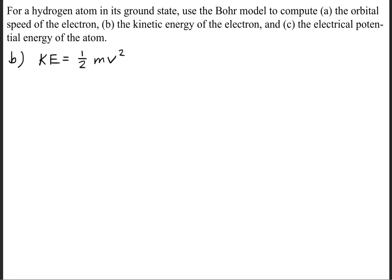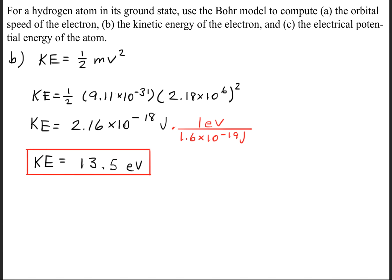In order to solve part B, we need the kinetic energy formula, or the classical kinetic energy formula. We now know what the velocity was, because we calculated it from part A. Once we plug in our values for the variables, we'll get a kinetic energy value of 2.16 times 10 to the negative 18th joules. However, we need to convert that to electron volts. So we'll use this conversion factor for every 1 electron volt. We have 1.6 times 10 to the negative 19th joules. This will give us a kinetic energy of 13.5 electron volts.